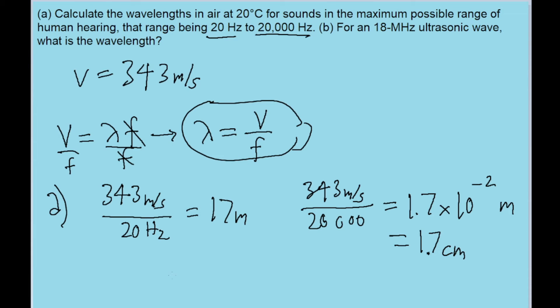So this means that for part A, the range of wavelengths for human hearing is going to be from about 1.7 centimeters to 17 meters. So that is the range of wavelengths that we have.